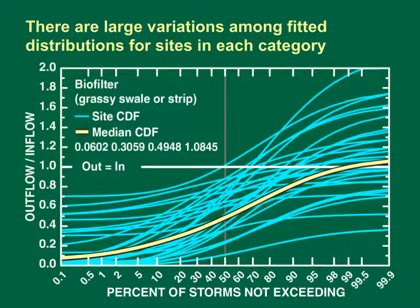This graph shows the fitted cumulative distribution functions for the trapezoidal distributions for volume reduction at 20 swale monitoring sites, and the distribution that would occur if the median of each statistic were selected. There are large variations in fitted distributions among sites in every BMP category. The vertical axis is the volume reduction ratios on a linear scale. If a value exceeds 1, more water flows out from the BMP than flows in. This may occur if there is storm-to-storm carryover or if there is groundwater discharge to the BMP. The horizontal axis is a probability scale indicating the percentage of storms with volume reductions that are less than or equal to a given value.